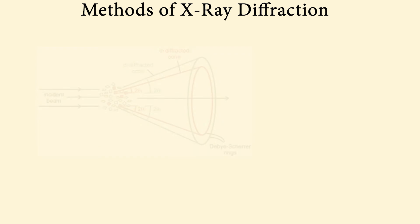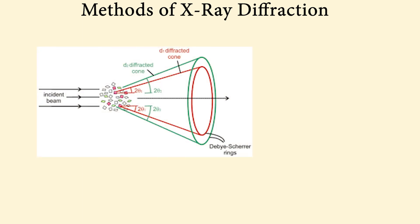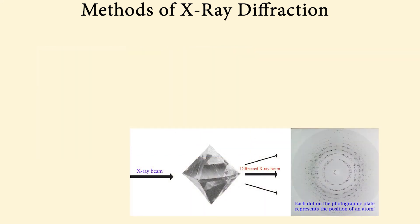Powder XRD is a technique primarily used for phase identification of a crystalline material, and it can provide information on unit cell dimensions. Single crystal XRD provides detailed information about the internal lattice of crystalline substances, including unit cell dimensions, bond angles and lengths, and details of site ordering.